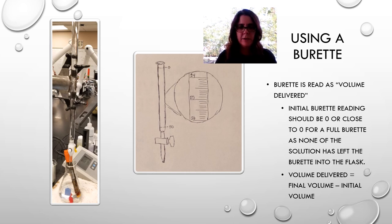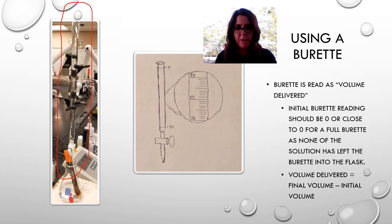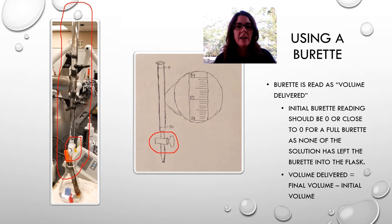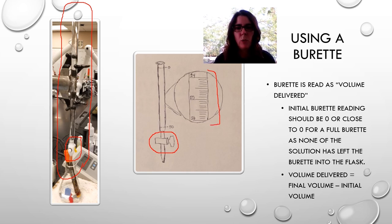The burette is a really tall, long cylindrical piece of glassware — I wasn't even able to get the whole thing in the photo. It has a valve at the end, and it can deliver very small volumes of liquid, even a fraction of a milliliter, so you can get very precise and accurate results. There are major markings every one milliliter and minor markings every tenth of a milliliter.